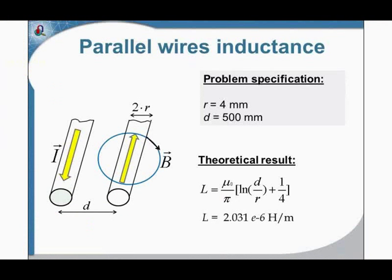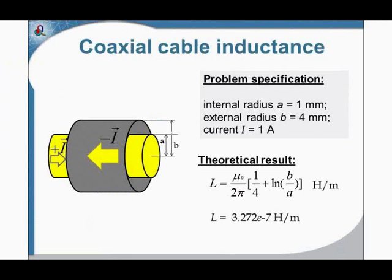Now let's move to the next example: the coaxial cable inductance. The transmission line in the previous example generates an intensive external field. The way to reduce the external field is by using coaxial cables. The cable consists of two conductors with direct and back currents, and there is some insulation between conductors. To calculate the inductance of the coaxial cable, you can use an analytical equation — here you can see it. Let's use QuickField to find the inductance.